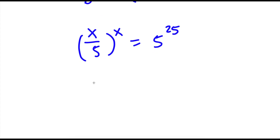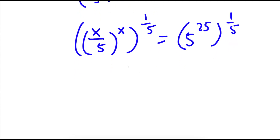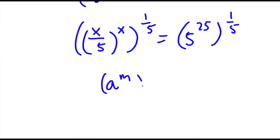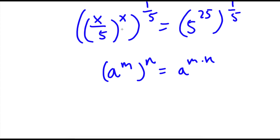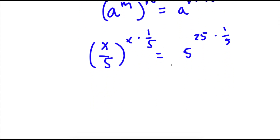Now if I take the power of 1 over 5 on both sides, I get x over 5 to the power of x, to the power of 1 over 5, equal to 5 to the power of 25 to the power of 1 over 5. If I have a to the power of m to the power of n, this equals a to the power of m times n. So x over 5 to the power of x times 1 over 5 equals 5 to the power of 25 times 1 over 5. Since x times 1 over 5 is x over 5, I have x over 5 to the power of x over 5.